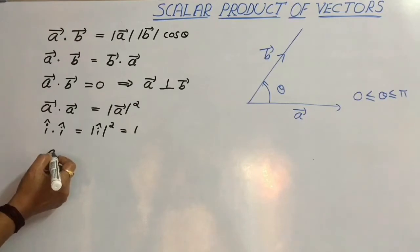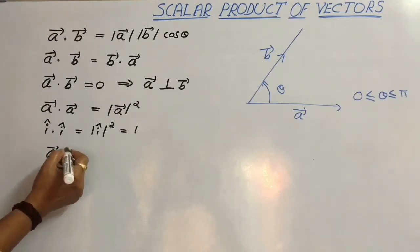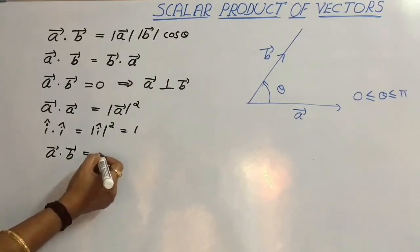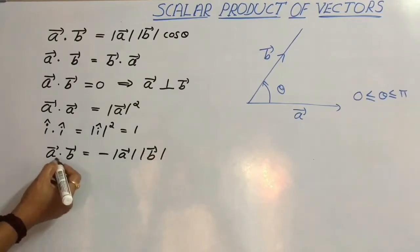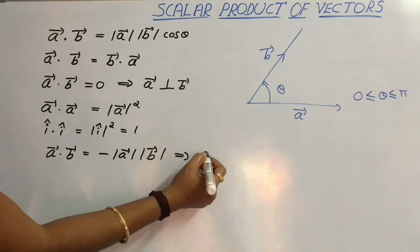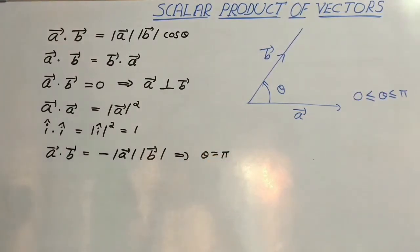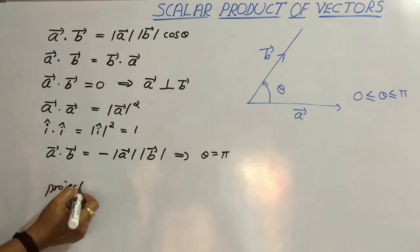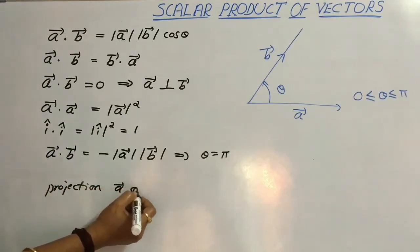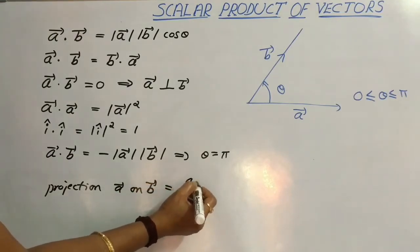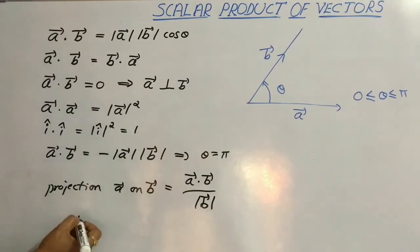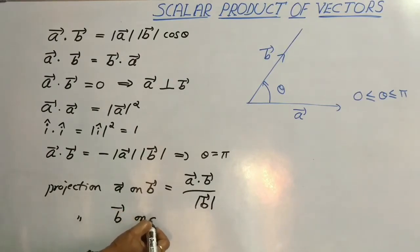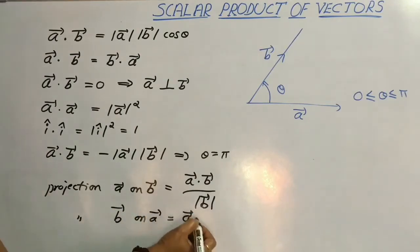Suppose if we consider A dot B equal to minus of mod of vector A into mod of vector B, then the angle between vector A and vector B is pi. If we consider the projection of vectors, the projection of vector A on vector B is equal to A dot B divided by mod of vector B. Similarly, projection of vector B on vector A is equal to A dot B divided by mod of vector A.